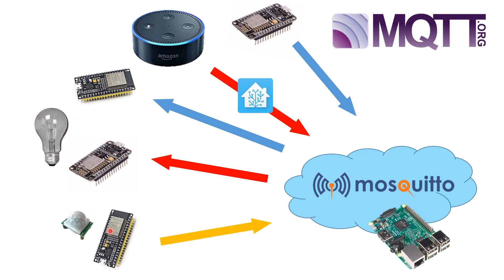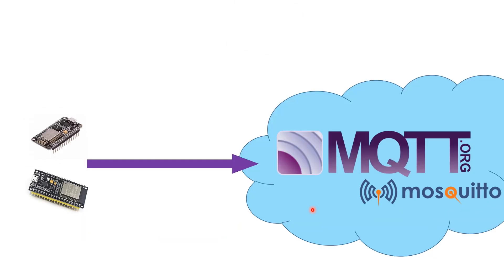Another scenario: a microcontroller with a PIR sensor can publish to a topic, and the same microcontroller subscribes to another topic to turn on a light when motion is detected. Mosquitto acts as a centralized broker — everything sends messages to it using the MQTT protocol. Think of it like SMS for microcontrollers: if you subscribe to a topic, all group members receive that message.